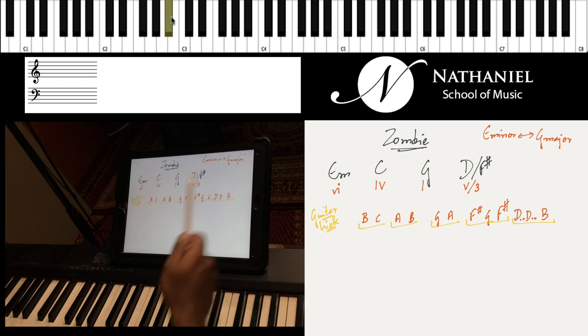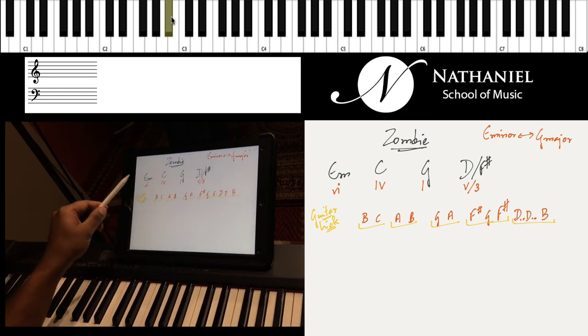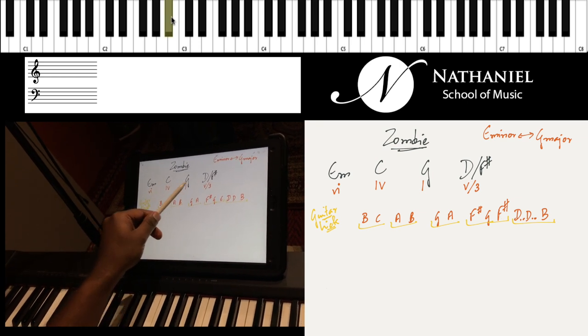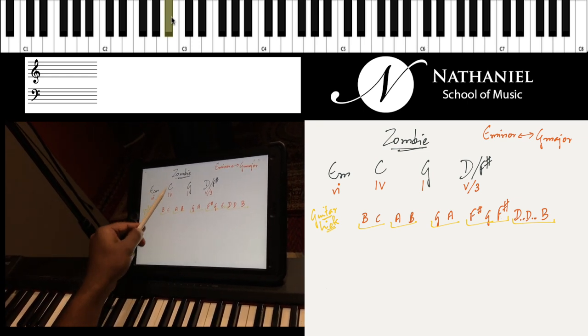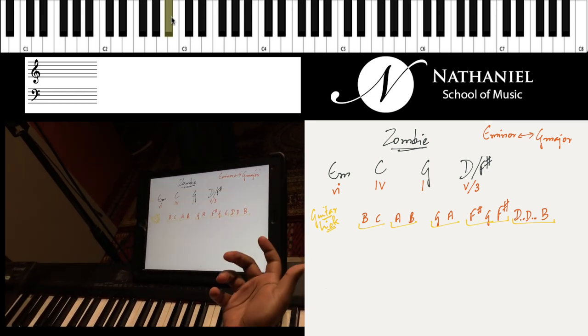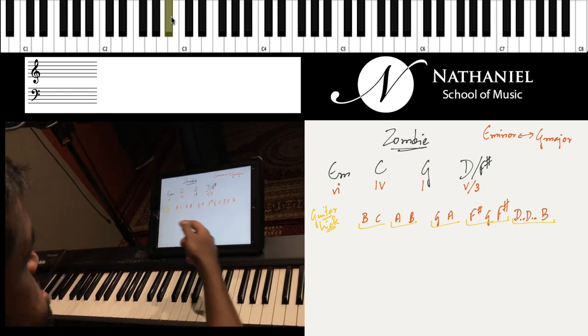Before we get into the actual chords, the progression is 6-4-1-5, 6-4-1-5. Very, very popular. It's also a cyclic chord progression, so what that means is it could have been 6-4-1-5.